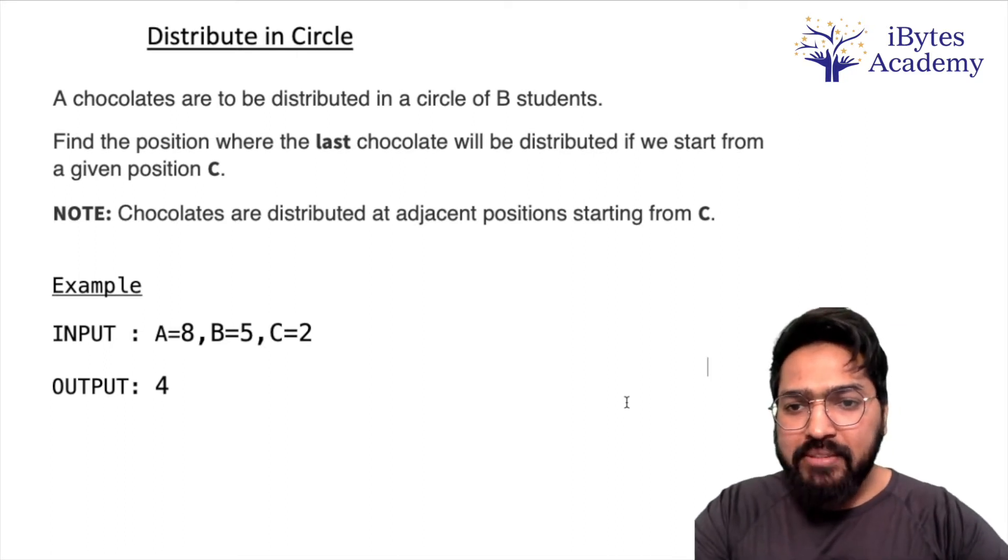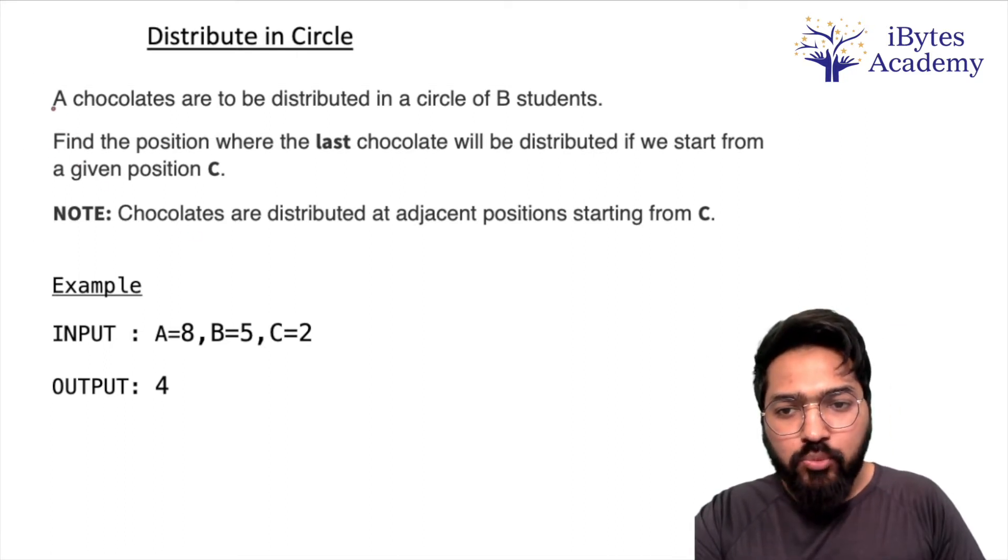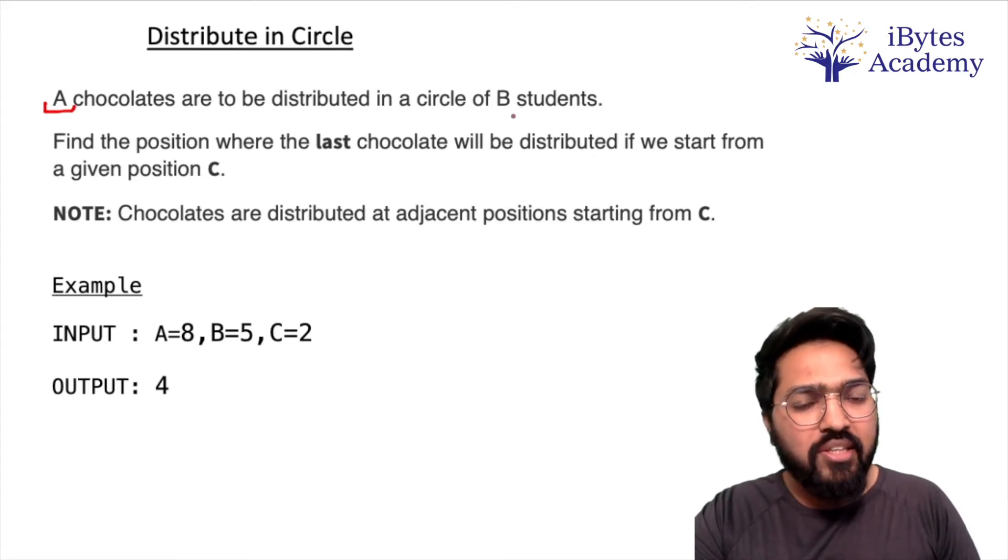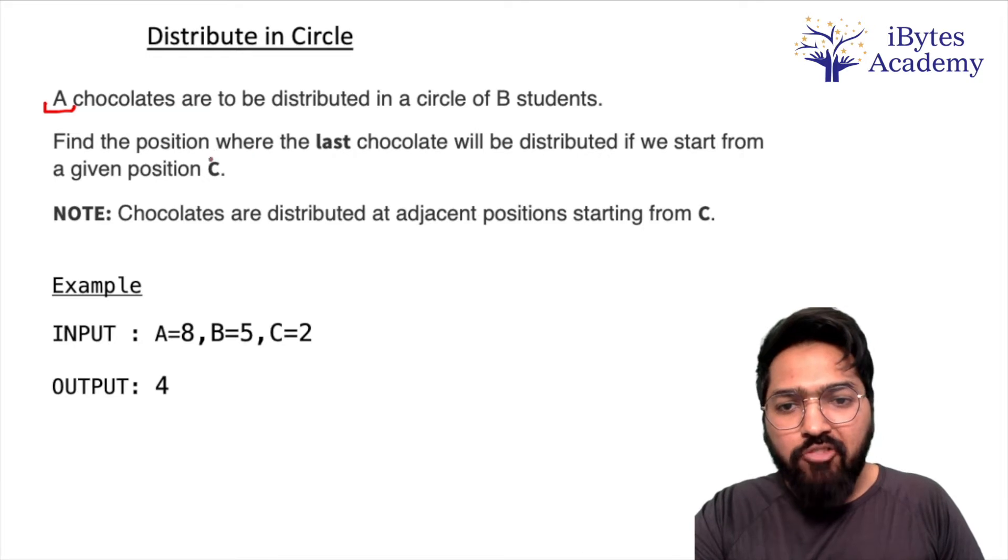So the problem is: A chocolates are to be distributed in a circle of B students. Find the position where the last chocolate will be distributed if we start from a given position C.